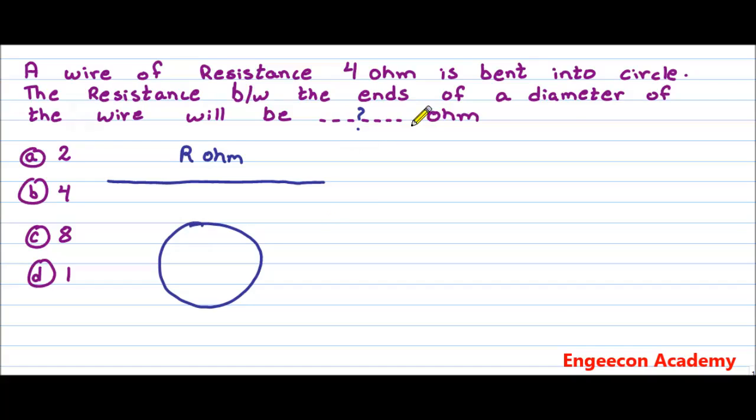So the resistance between the ends of its diameter. You must have some concept of what is diameter. Diameter is a length which touches the circle on two different points and must cross the central point of a circle.